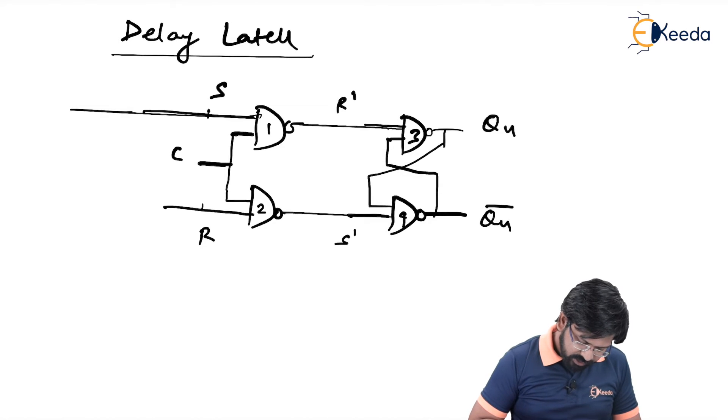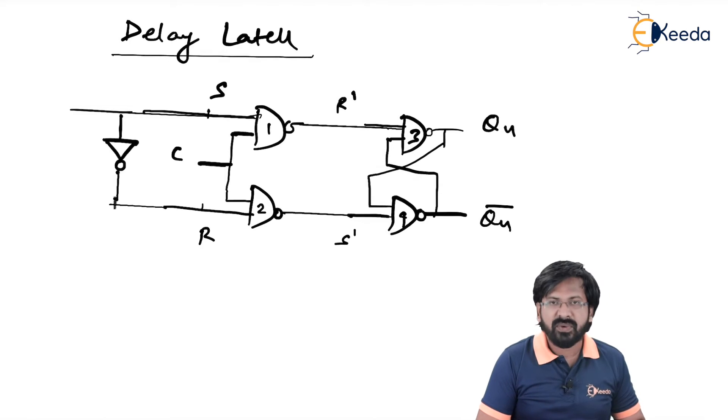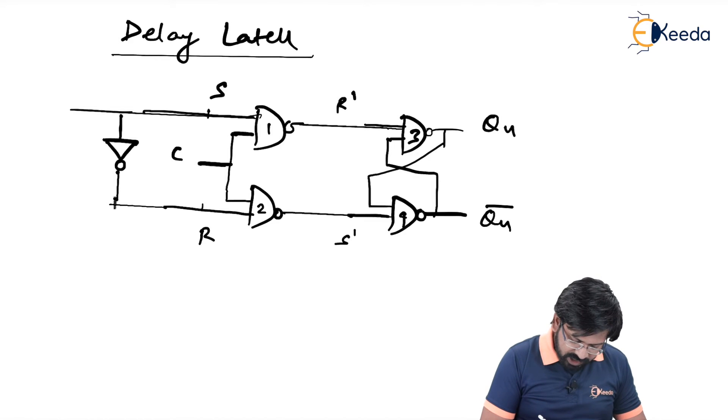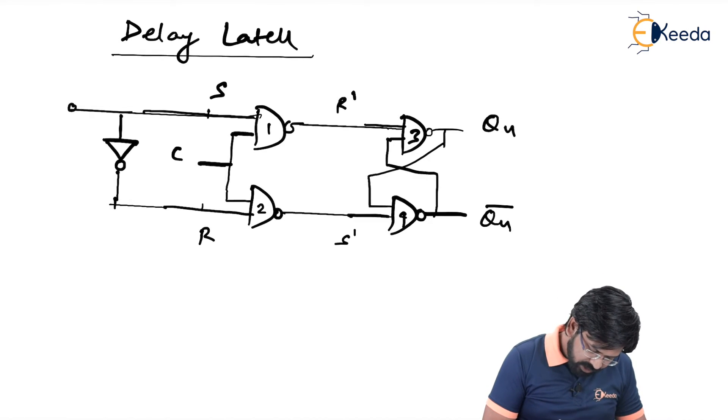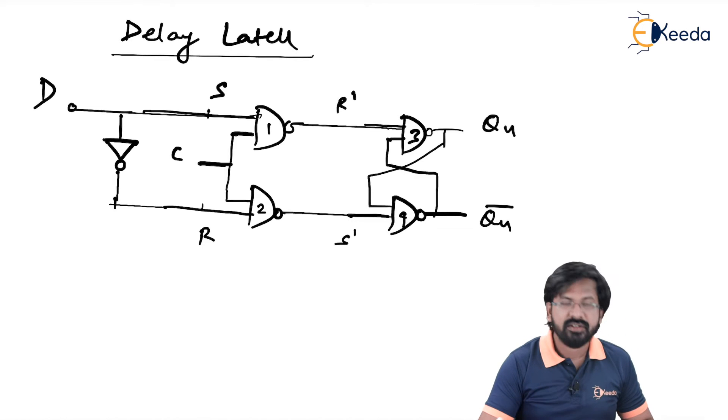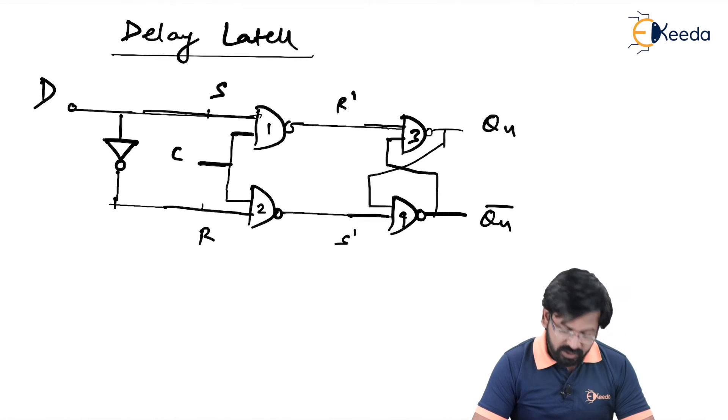So between S and R, I am going to place a NOT gate. Now because of which what has happened, this S and R, since they are sharing a same gate, then we got a provision of applying only one input and let me name that input as D and that D stands for delay. So this is called as a delay latch now and let us see how it works.